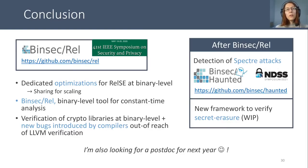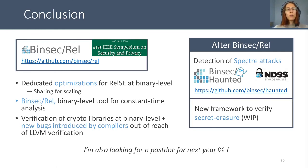To conclude, we presented an optimization for relational symbolic execution at binary level, which enables sharing between pairs of executions, including in the memory. We implemented our technique in a tool which is open source on GitHub. We also verified cryptographic libraries at binary level and found new bugs introduced by compilers that were out of reach of LLVM verification tools. Since then, we extended BINSEC-REL to detect Spectre attacks, and we also worked on a framework to automatically verify the preservation of secret erasure by compilers. Finally, I'm looking for a postdoc to work on software or hardware verification against microarchitectural attacks. Thanks for listening.